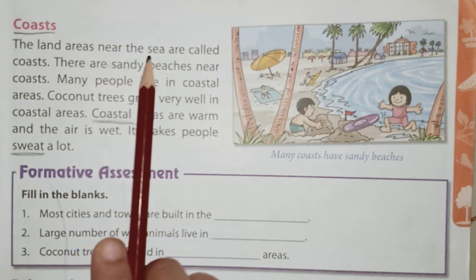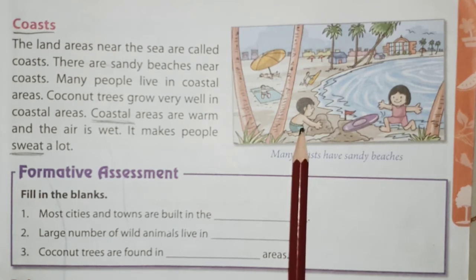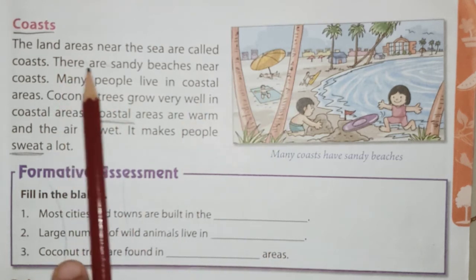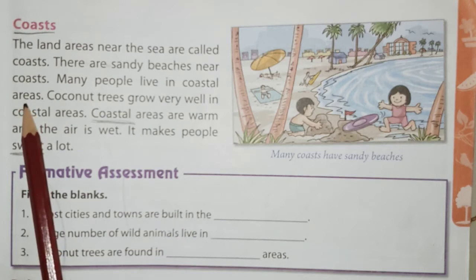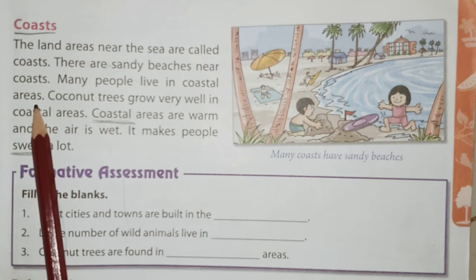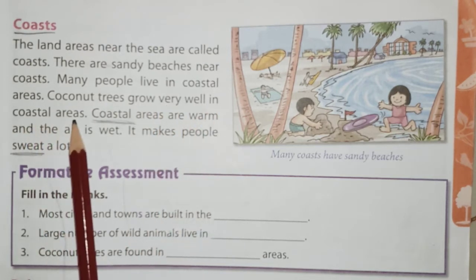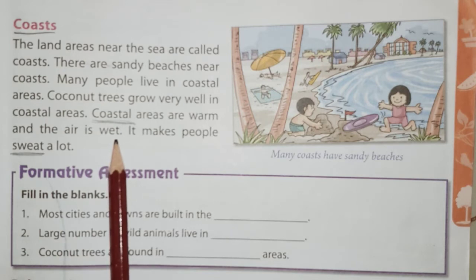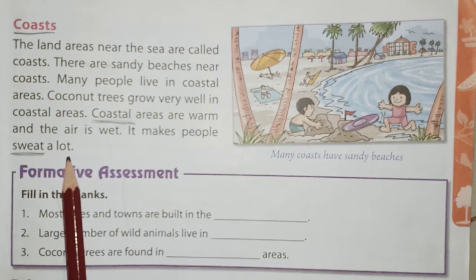The land area near the sea is called coast. The children are enjoying on the beach — that sandy beach we call a coast. There are sandy beaches near coast. Many people live in coastal areas. In India, we have a western coastal area and an eastern coastal area. Coconut trees grow very well in coastal areas. Coastal areas are warm and the air is wet because the humidity is very high there.